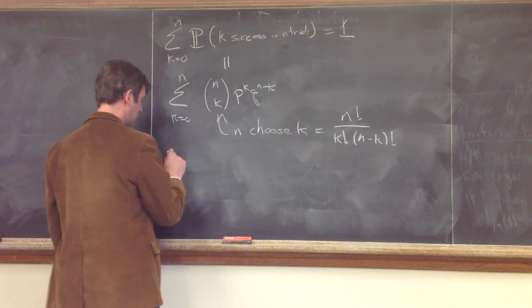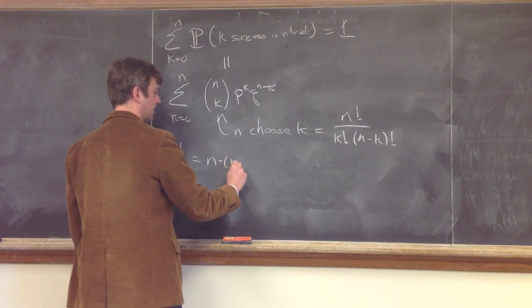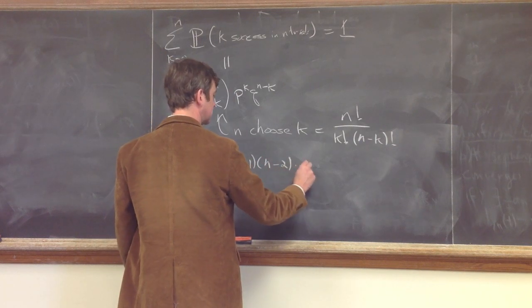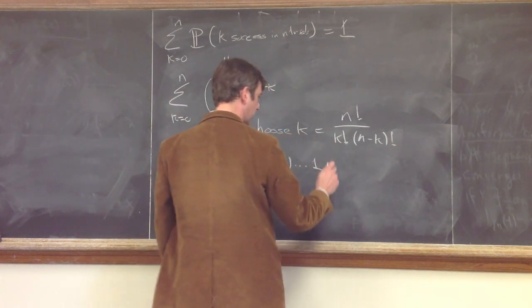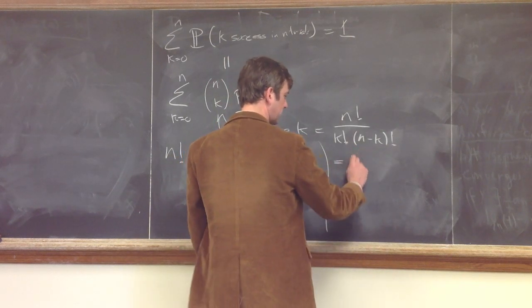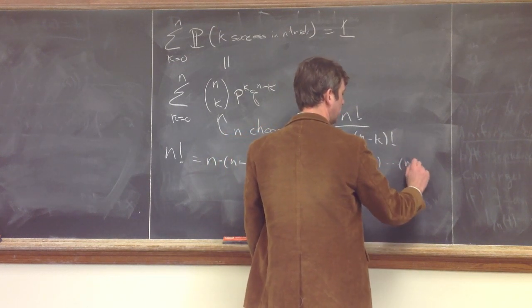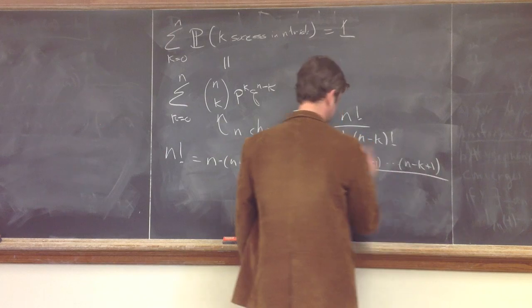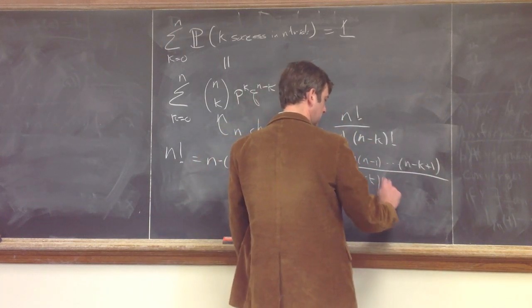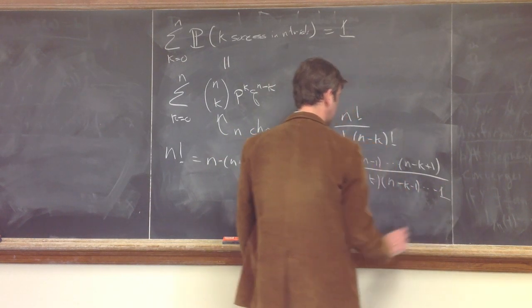Where n factorial, or any n factorial, is n times n minus 1 times n minus 2 dot dot dot times 1, so this thing here always cancels to all these, and then this is n minus k, n minus k minus 1, all the way down to 1.